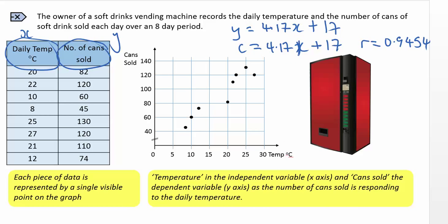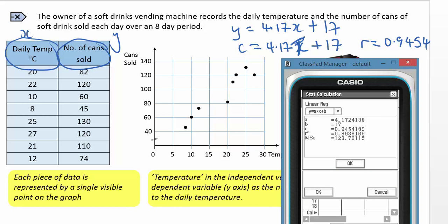And the correlation coefficient 0.9454. Now that indicates there's a very strong positive correlation, and that therefore means that as the temperature increases, we sell more cans of drink.